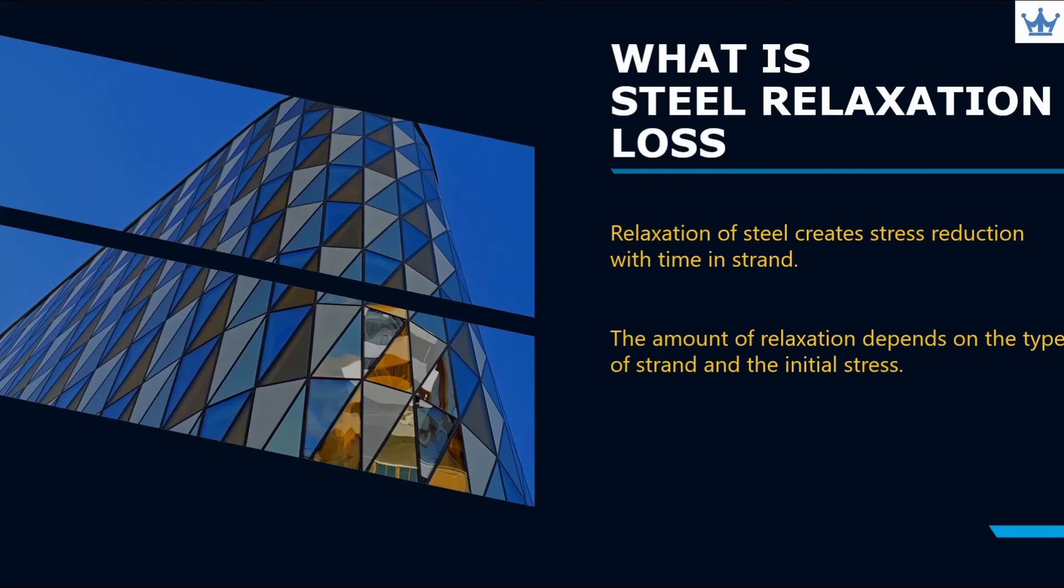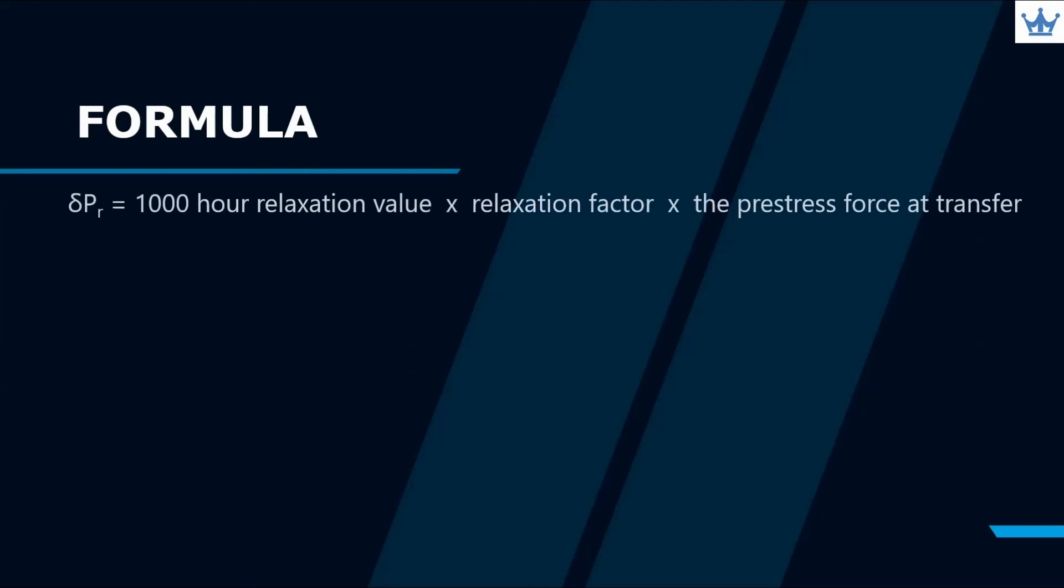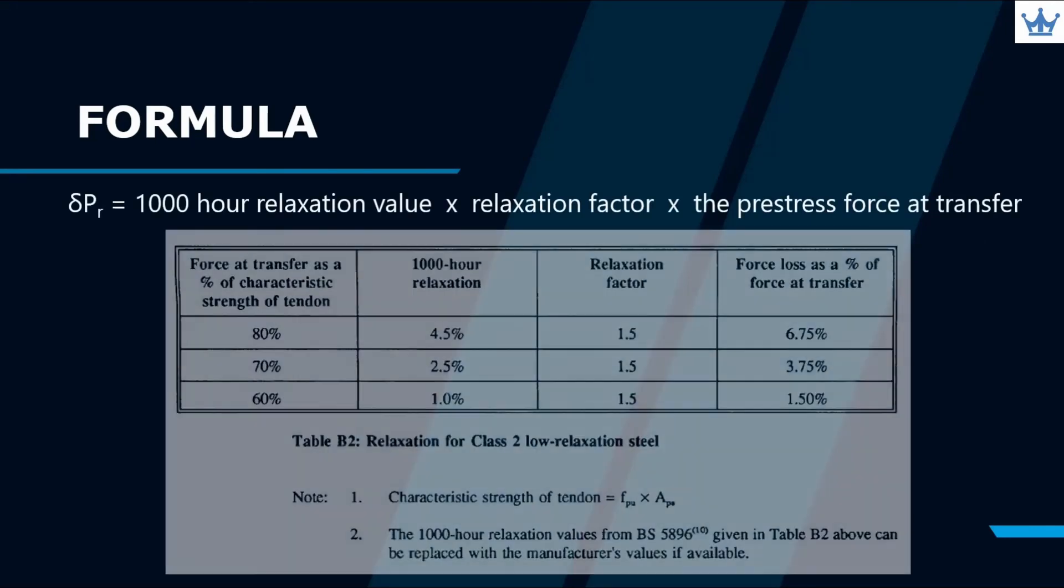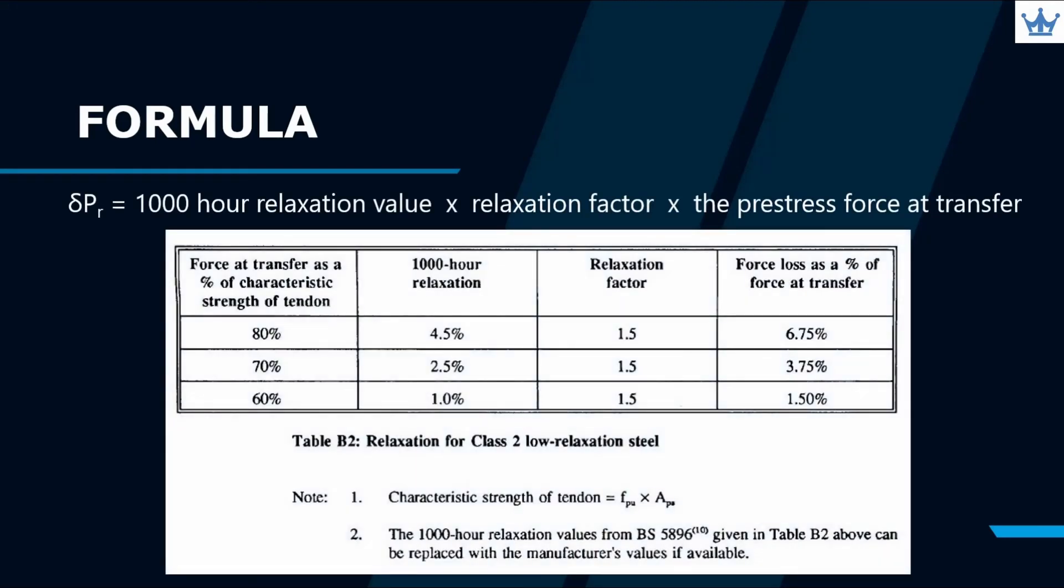Refer to the formula shown for steel relaxation loss. The table above is for low relaxation steel. Here, you can get a 1000-hour relaxation value and relaxation factor to adopt in the formula. Then, we can find the loss of force due to relaxation of steel.